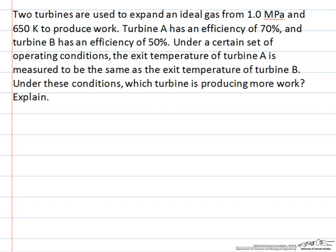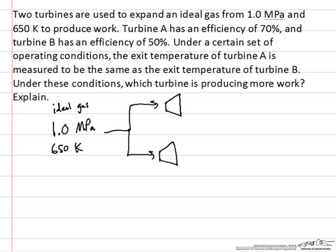So we have a stream in this problem that starts out at 1 MPa and 650 Kelvin. We'll treat it as an ideal gas. We're going to expand this gas in one of two turbines. We'll call it turbine A and turbine B. Turbine A has an efficiency of 70 percent and turbine B has an efficiency of 50 percent. They have the same outlet temperature, so we'll call that T2.